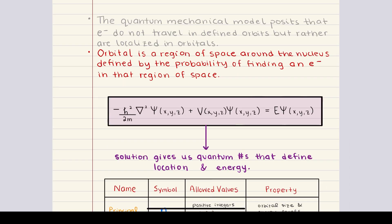We have to start with discussing the quantum mechanical model and quantum numbers. Unlike earlier models like Bohr's model, which depicted electrons orbiting the nucleus in fixed paths, the quantum mechanical model instead describes electrons as existing in orbitals, which are regions of space where there's a high probability of finding an electron.